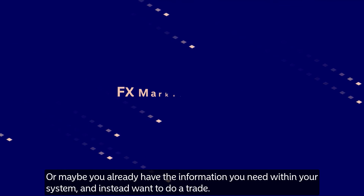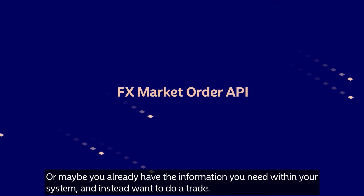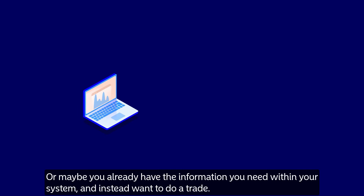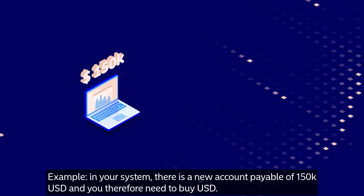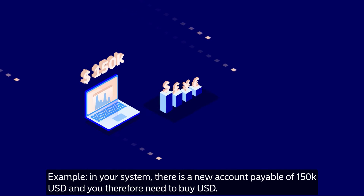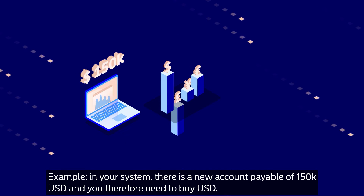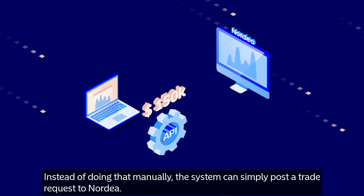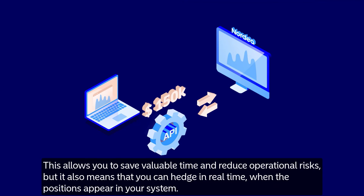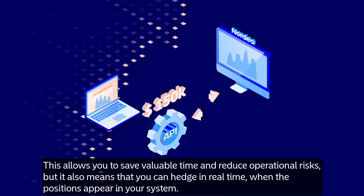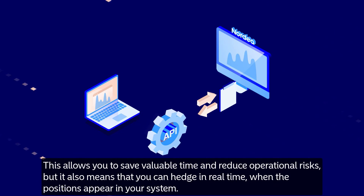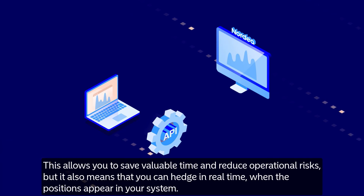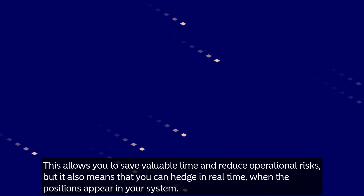Or maybe you already have the information you need within your system and instead want to do a trade. For example, in your system there is a new account payable of 150,000 US dollars and you therefore need to buy US dollars. Instead of doing that manually, the system can simply post a trade request to Nordia. This allows you to save valuable time and reduce operational risks, but it also means that you can hedge in real time when the positions appear in your system.